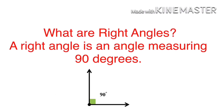Next, let us learn what is a right angle. A right angle is an angle measuring exactly 90 degrees. The angle which is exactly equal to 90 degrees is called a right angle.